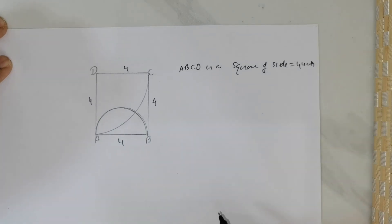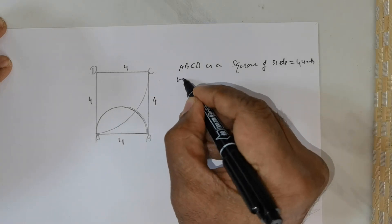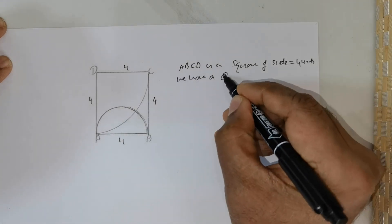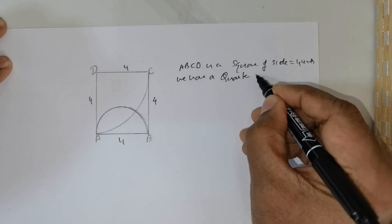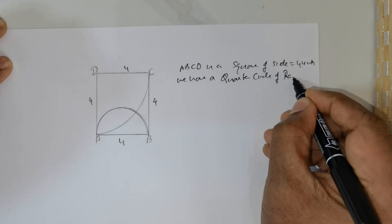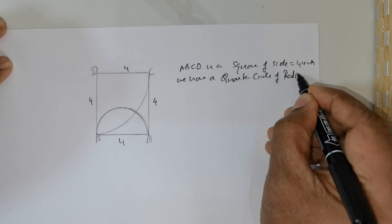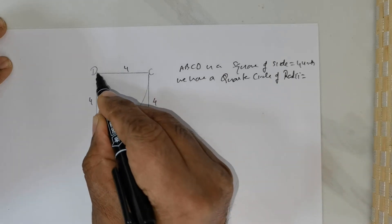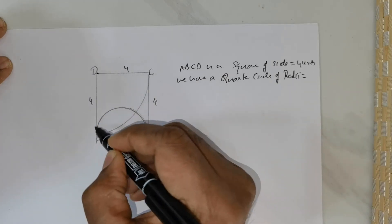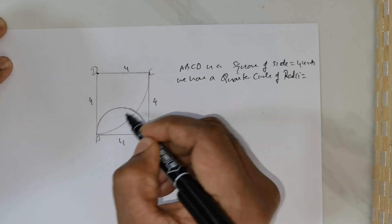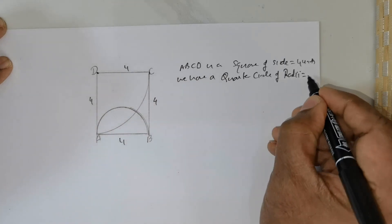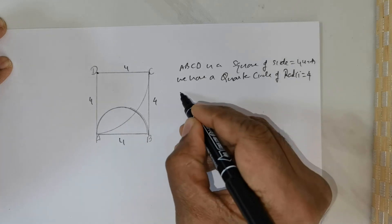So this is given. Next, we have a quarter circle. You can clearly see the quarter circle is oriented in this fashion, so that would mean the radius is going to be 4 units.